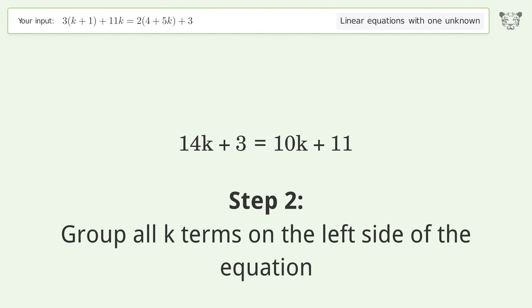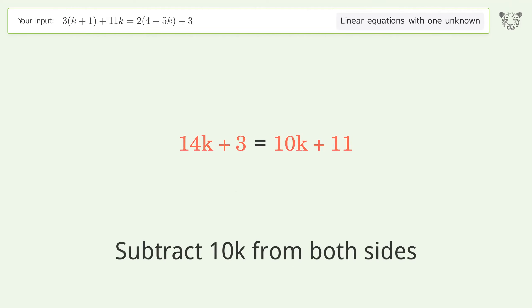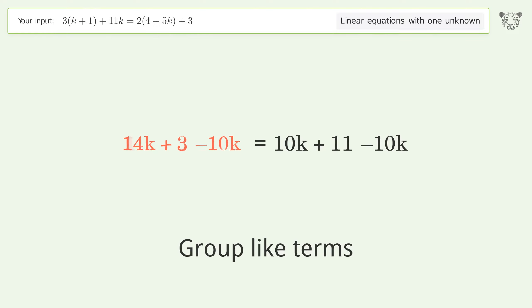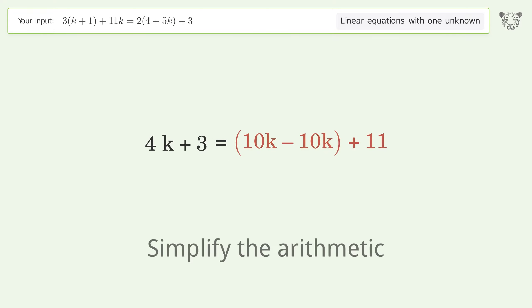Group all k terms on the left side of the equation. Subtract 10k from both sides. Group like terms, simplify the arithmetic, group like terms, and simplify the arithmetic.